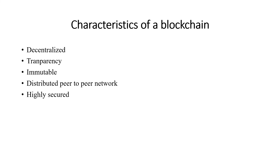It is immutable — once a transaction has been recorded, it cannot be modified. The timestamp when a block is created and its hash value are recorded, so no hacker can easily modify the data. It is distributed across a peer-to-peer network with duplicate copies among all nodes, and it is highly secured because SHA-256 algorithms are used to achieve proof of work and consensus.